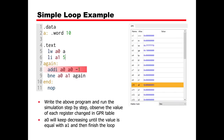We go with the simple loop example. We declare data with a label A pointing to a word value of 10, and in the text section we load word A into A0 and load immediate 5 into A1. We loop by decrementing A0 by 1 from 10 until it equals A1. We can simulate this by clicking next cycle and observe the register values as A0 decreases until it matches A1 and the loop finishes.